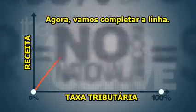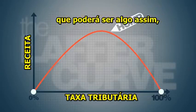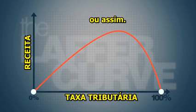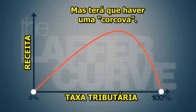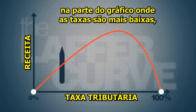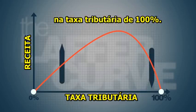Now let's complete the curve. When we do, we see that the curve must have a hump. It could look like this, or this, or this, but it has to have a hump. This is simply because the revenue line has to go up in the low tax rate part of the graph, and it has to start going down to reach the point we drew at the 100% tax rate.